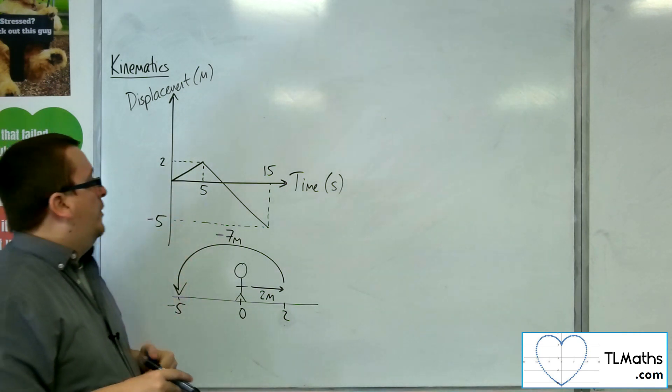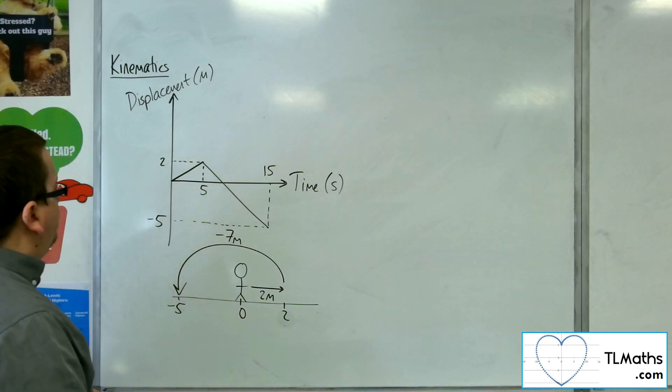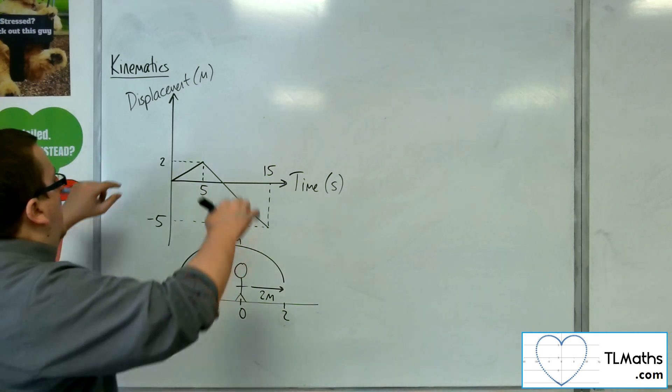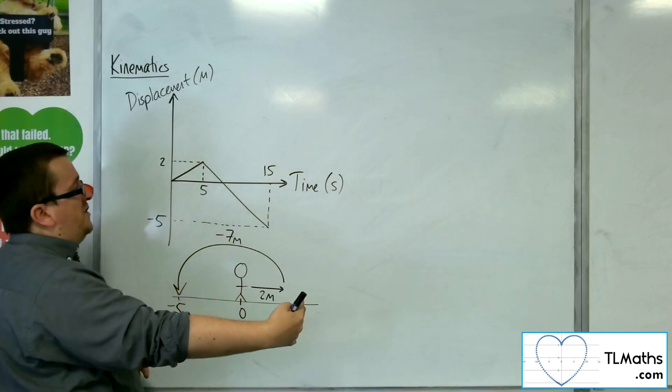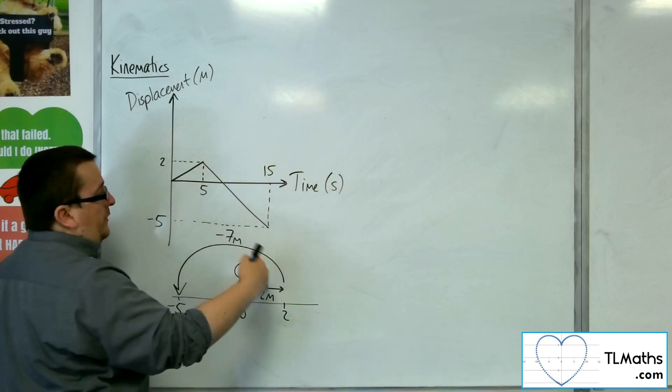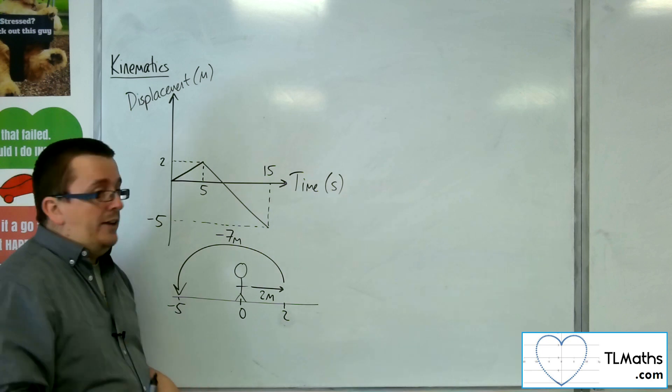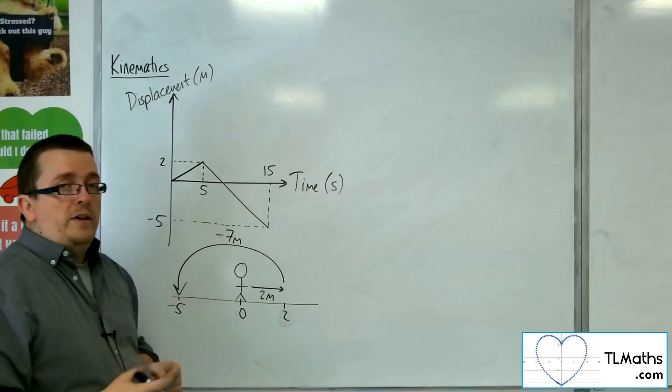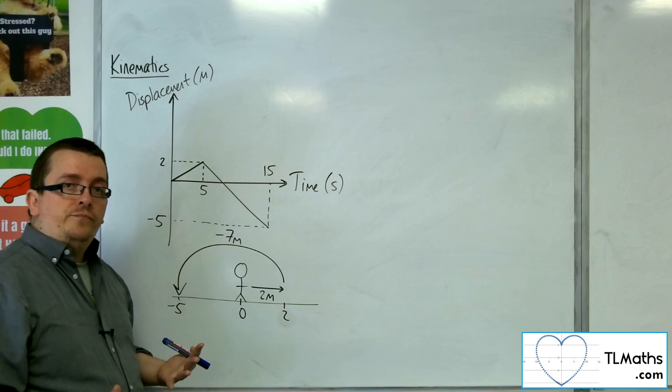So, their displacement time graph could look like that. So, in the first five seconds, they walk two metres in the positive direction. And then in the next ten seconds, they walk seven metres in the negative direction. So, their final displacement is minus five metres from their starting position.